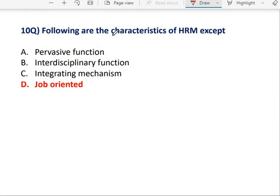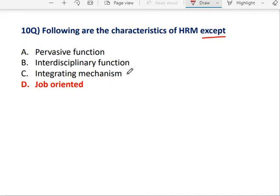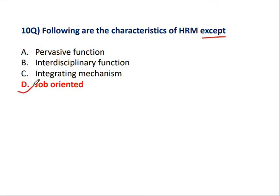Question 10: Following are the Characteristics of HRM, except — कौन Characteristics नहीं है? Pervasive Function, Interdisciplinary Function, Integrating Mechanism — these all three are examples of HRM characteristics. But Job Orientation is not a characteristic of HRM. यहाँ पे Characteristics पूछा है, Function नहीं पूछा है.